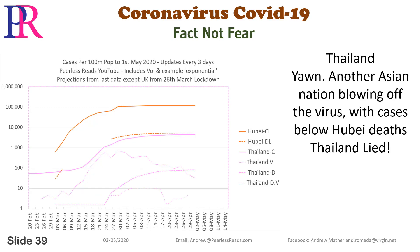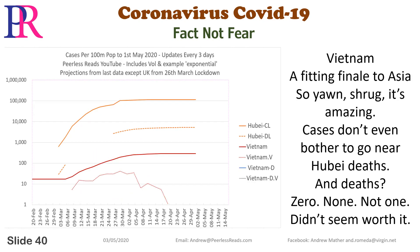Thailand: yawn — another Asian nation blowing off the virus, with cases below Hubei deaths. Thailand lied. Vietnam: a fitting finale to Asia. So yawn, shrug — it's amazing. Cases don't even bother to go near Hubei deaths, and deaths: zero, none, not one. Didn't seem worth it.